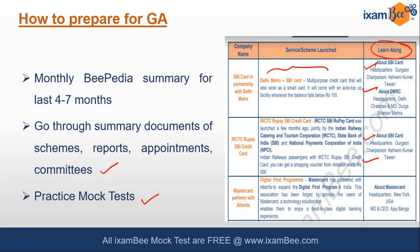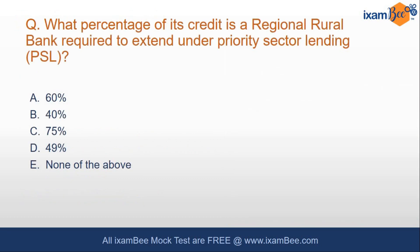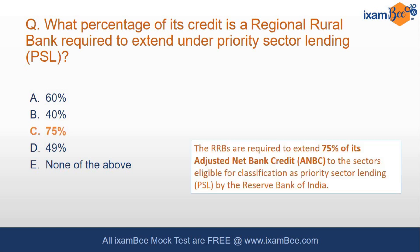Let's see what kind of questions can be asked in your exam. For example: 'What percentage of its credit is a regional rural bank required to extend under priority sector lending?' Banks have to lend a portion of their credit to the priority sector — agriculture, micro and small enterprises, weaker sections, housing, and education. The answer is 75 percent. Also note that you need to know full forms and abbreviations — for instance, ANBC stands for Adjusted Net Bank Credit.